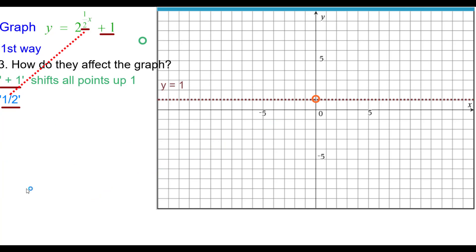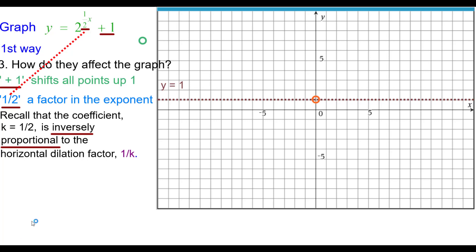The one half parameter is a factor in the exponent. Please recall that the coefficient is inversely proportional to the horizontal dilation factor which is the reciprocal of k. So in this case we are going to multiply each x value by the reciprocal of k which would be 2.